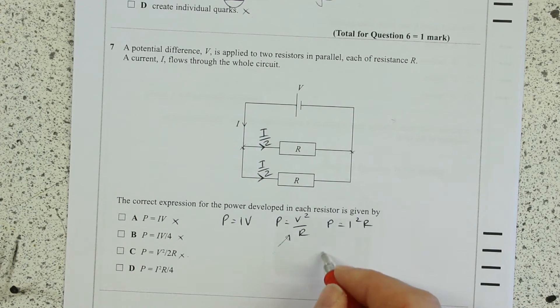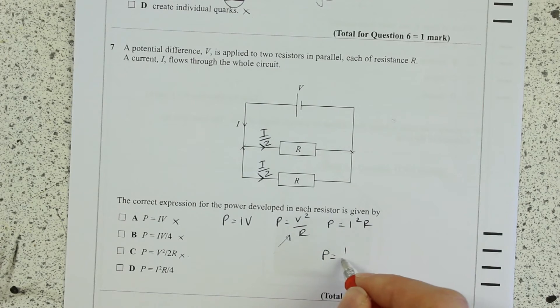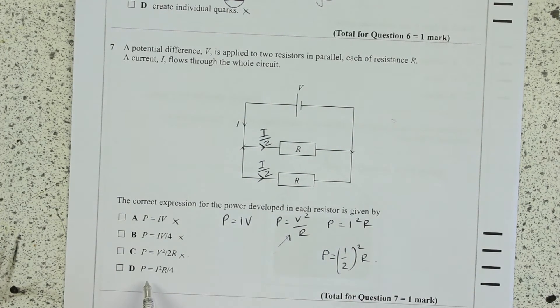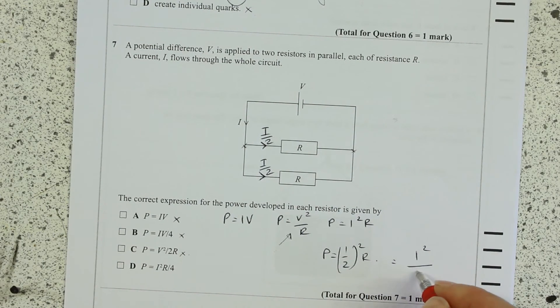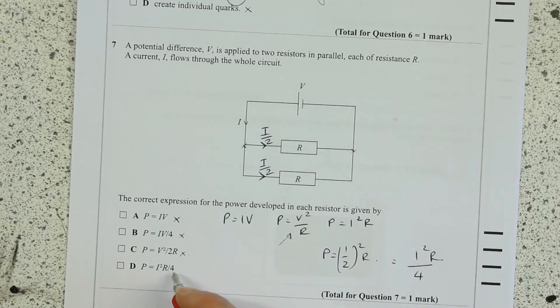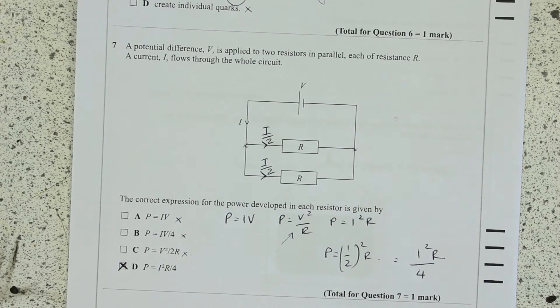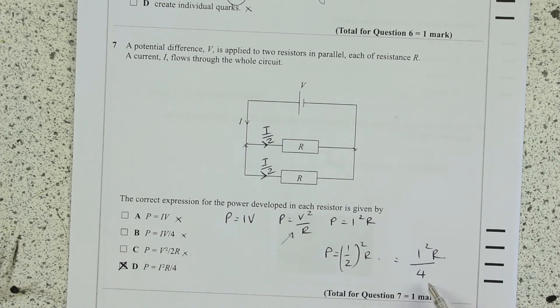What about this? Yes, now if I sub in instead of I, I sub in I over 2 which is our current and square that, then I will get I squared over 4R which is the same as that. Okay, nice little bit of algebra manipulation, you need to be aware of that thinking about laws, thinking about proportional changes.